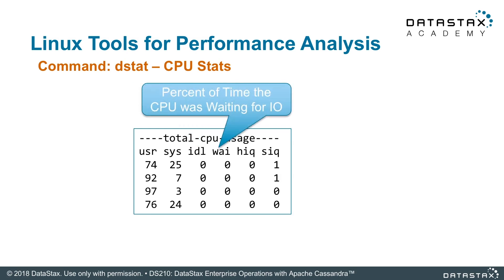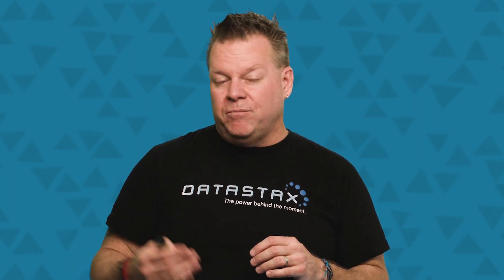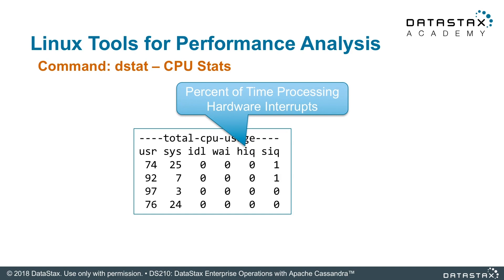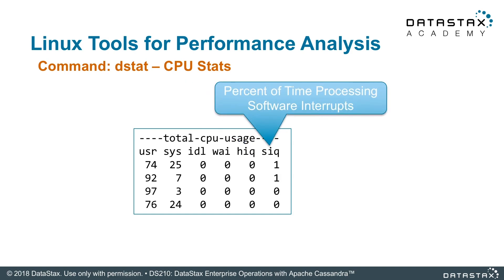The idle and wait values are in conjunction with the system and user time. I like to make sure that the wait is as close to zero as possible. System wait means the CPU is sitting there waiting for something else to be ready — usually the disk. The disk is the weakest link in every computer; it is the slowest and will make everything else wait. So if you see a wait number higher, it's time to go look at the disk. The hardware and software interrupts give you insight into what that wait is about. A lot of hardware interrupts likely means it's waiting for the disk.